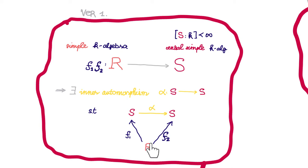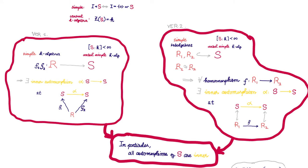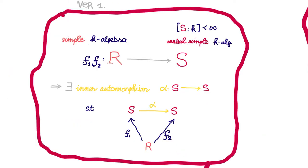In the specific case when R is S and f1 is the identity, the theorem just says that every automorphism f2 of S is inner. Note that these maps fi have to be injective, and thus R must also be finite dimensional over k, and this is very important.